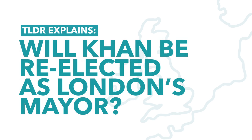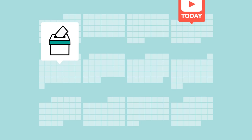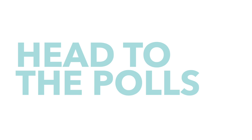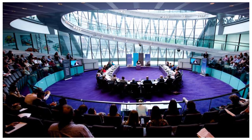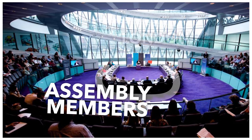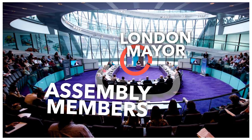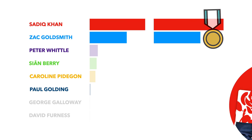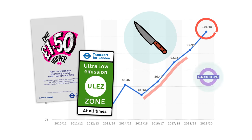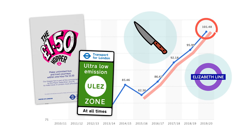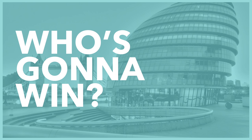Hello and welcome to another TLDR UK video. On the 6th of May, Londoners will once again head to the polls in the all-important London mayoral elections. Alongside 25 Assembly members, the main focus will inevitably be on the election of a new mayor. Having been voted in back in 2016, all eyes are on the incumbent, Sadiq Khan. In this video, we'll take a look at Khan's mayorship so far, the issues facing all mayoral candidates, and whether London is about to vote him back in for another term.